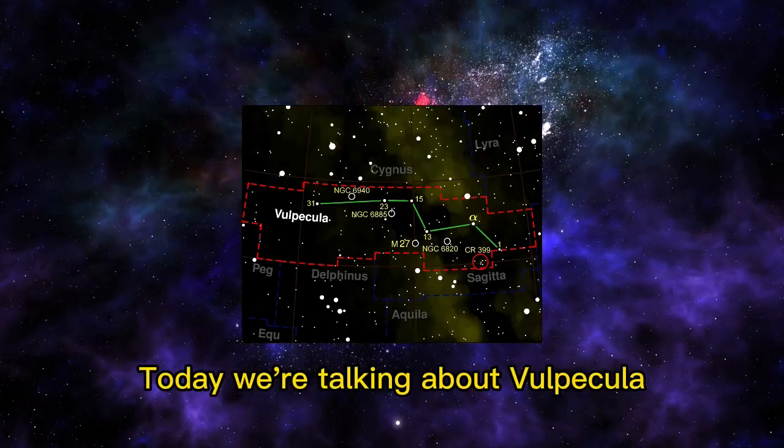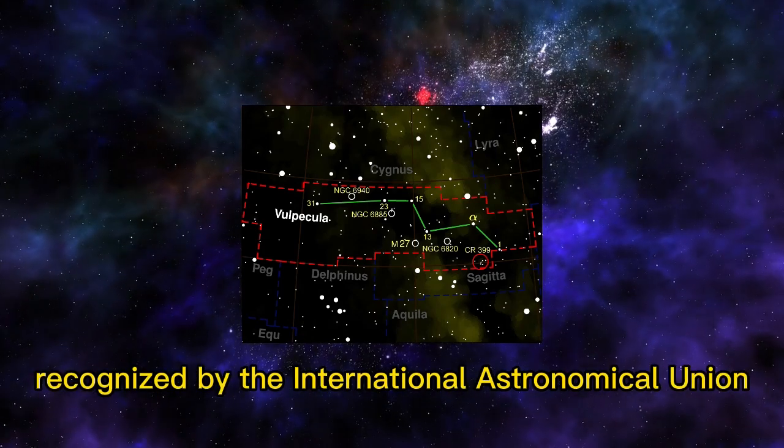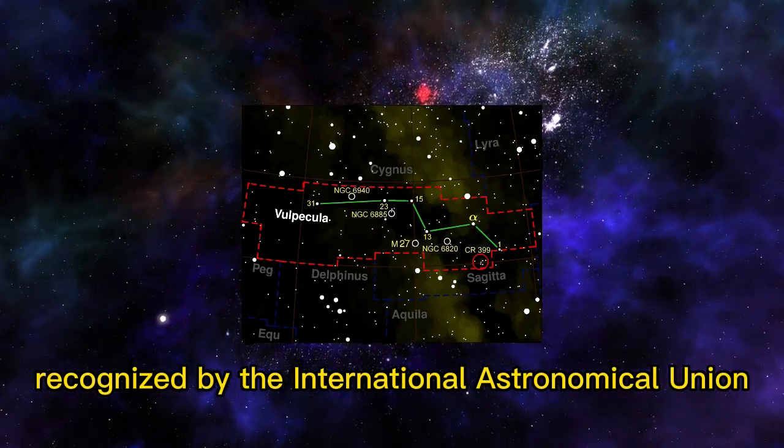Welcome to the video. Today we're talking about Vulpecula, one of the 88 modern constellations recognized by the International Astronomical Union.